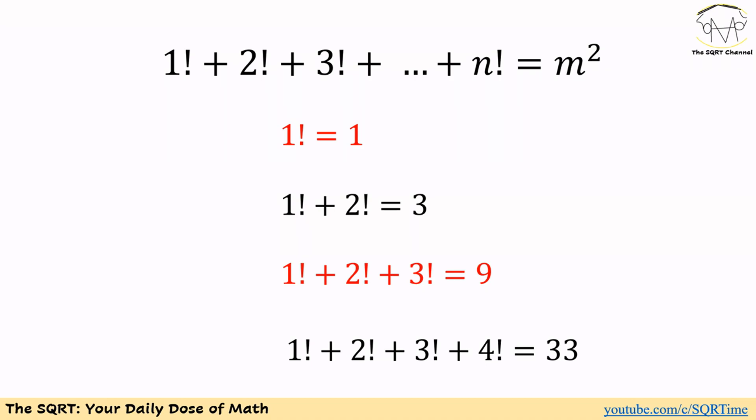Now let's compute the cumulative sums. 1 factorial is 1. 1 factorial plus 2 factorial is 3. 1 factorial plus 2 factorial plus 3 factorial is 3 plus 6 or 9. Then 1 factorial plus 2 factorial plus 3 factorial plus 4 factorial requires adding 24 to 9, giving us 33.